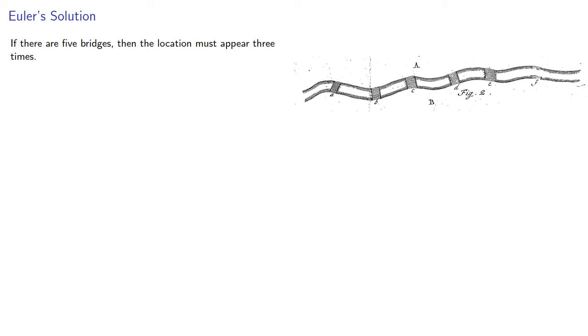If there are five bridges, then the location must appear three times. And in general, if there are 2n+1 bridges, the location must appear n+1 times.